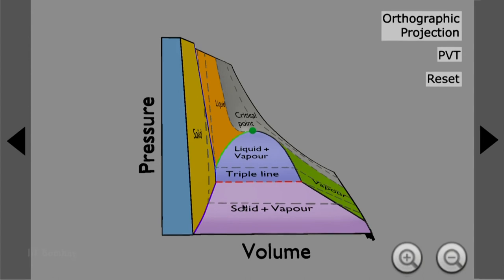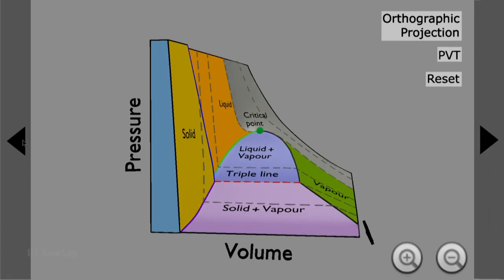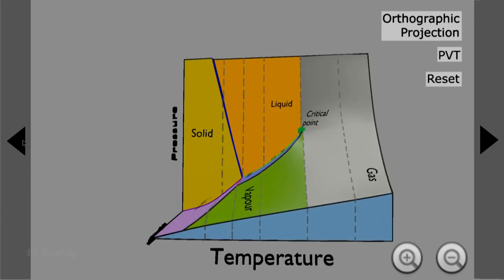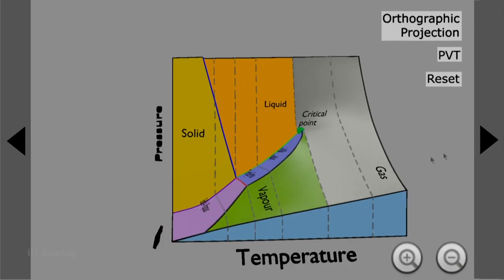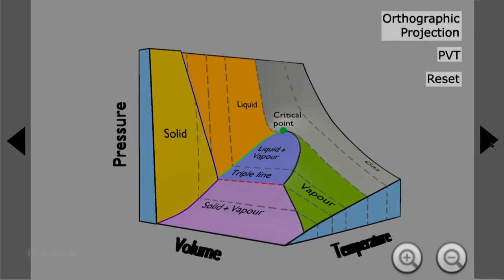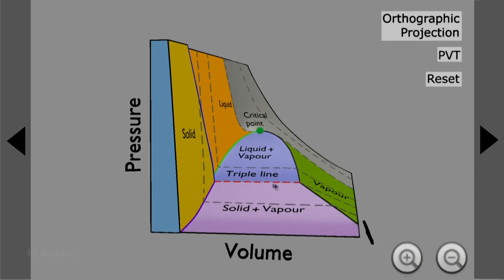Solid-to-vapour transition also passes through a solid-vapour region. Coming back to this direction, what you can see is the existence of a triple point. Solid, liquid, and vapour are actually coexisting — all three phases are in equilibrium at one point. In the PV axis I see a triple line rather than a triple point. The triple line has not much significance, but the triple point has significance: it tells us that at a given pressure and temperature condition, all three phases are in equilibrium and they coexist.